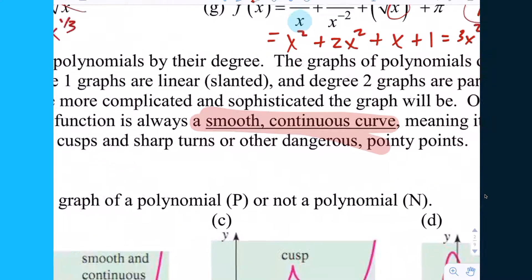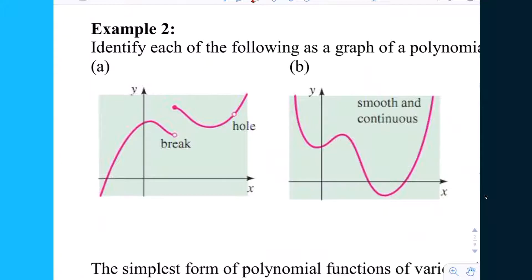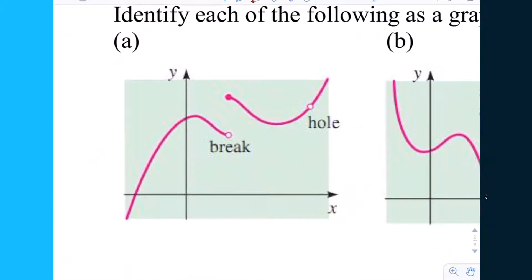Let's say if these are polynomials: P for polynomial or N for not a polynomial. Letter A — is that a polynomial's graph? No. Why not? It's not continuous. The graph itself shows there's a break, which is a jump, and a hole. So wherever it does exist it looks smooth, but it's not continuous. So no.